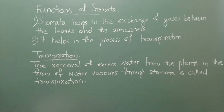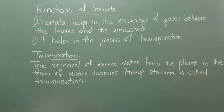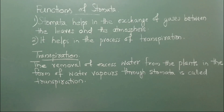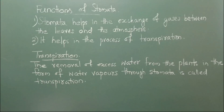What are the functions of stomata? Number one: stomata helps in the exchange of gases between the leaves and the atmosphere. During daytime, the leaves prepare food for the entire plant. For that the leaves need carbon dioxide, so through the stomata the leaves breathe in carbon dioxide. After photosynthesis, the waste product — which is oxygen for the plant — is breathed out through the stomata.